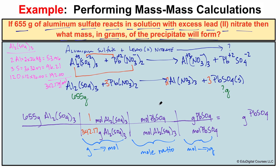Looking at the mole ratio: the coefficient in front of PbSO₄ is 3, and the coefficient in front of aluminum sulfate is 1. So our mole ratio is 3 moles PbSO₄ per 1 mole Al₂(SO₄)₃.